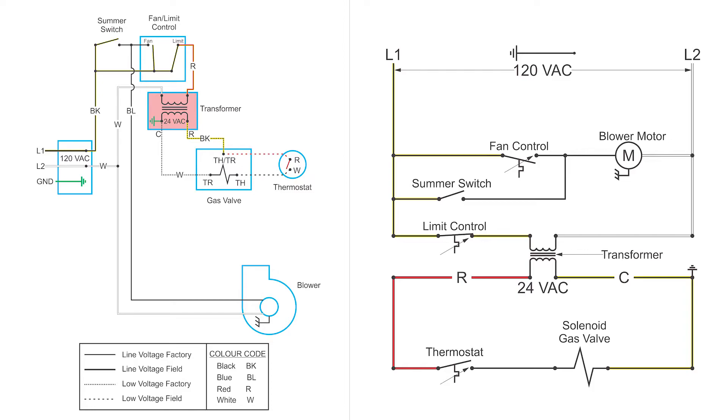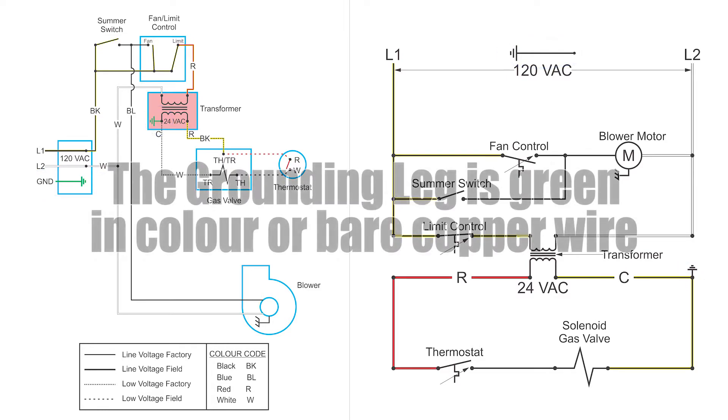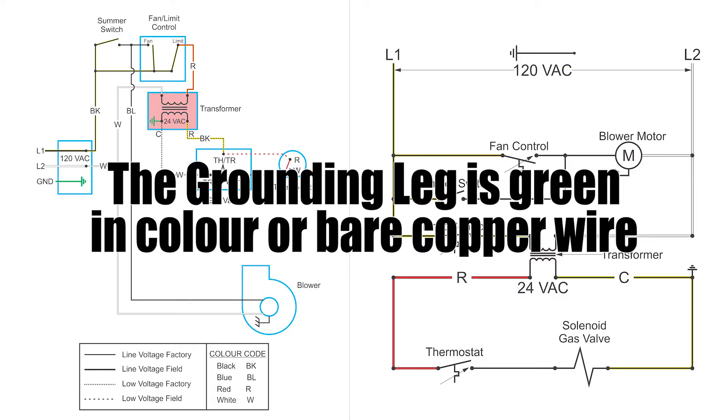Some of you may have noticed this little sideways Christmas tree in the 120 volt and 24 volt side. Those are just grounding wires. Their typical color designation is green or bare copper wire.